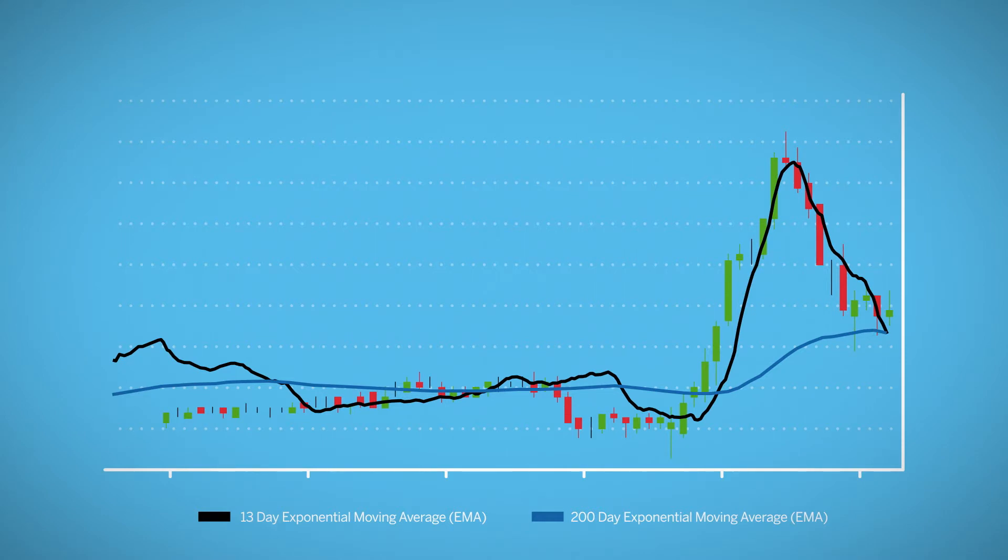Of particular interest for traders can be when moving averages cross over. Crossovers, which occur when one moving average line crosses another moving average line, is used to signal bullish and bearish signals. Short-term moving averages crossing above longer-term moving averages is generally seen as bullish, and long-term moving averages crossing below short-term moving averages is generally seen as bearish.